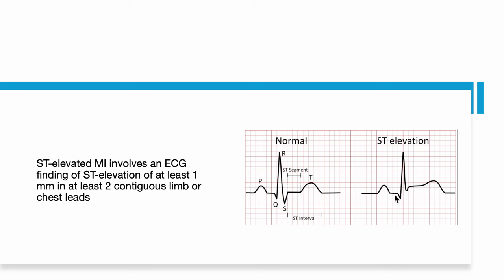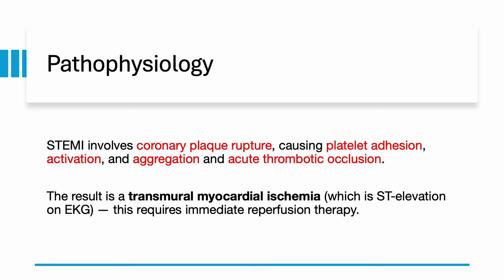ST elevation MI involves an EKG finding of ST elevation of at least 1 mm in at least 2 contiguous limb or chest leads. It involves coronary plaque rupture causing platelet adhesion, activation, and aggregation and acute thrombotic occlusion. The result is transmural myocardial ischemia, which is the ST elevation seen on EKG.